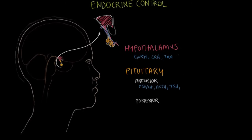Continuing in that list, you have growth hormone-releasing hormone. Growth hormone-releasing hormone is the hypothalamus's signal to the pituitary gland to release its hormone, growth hormone. Growth hormone goes to the long bones and the big muscles in our body and stimulates growth.